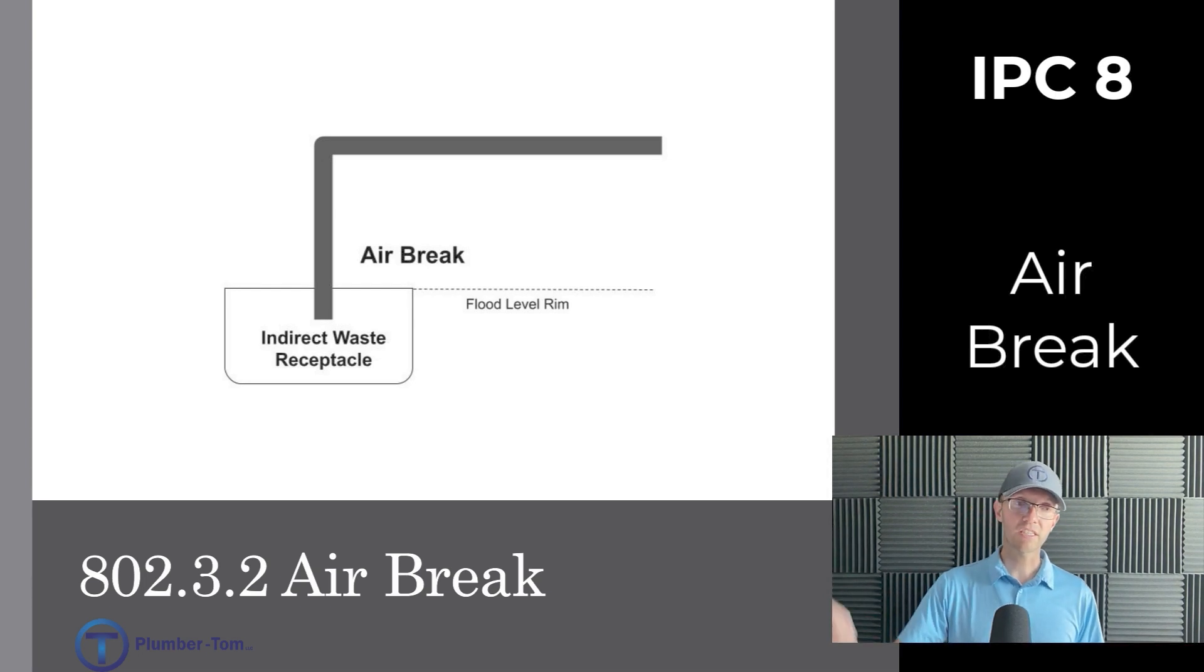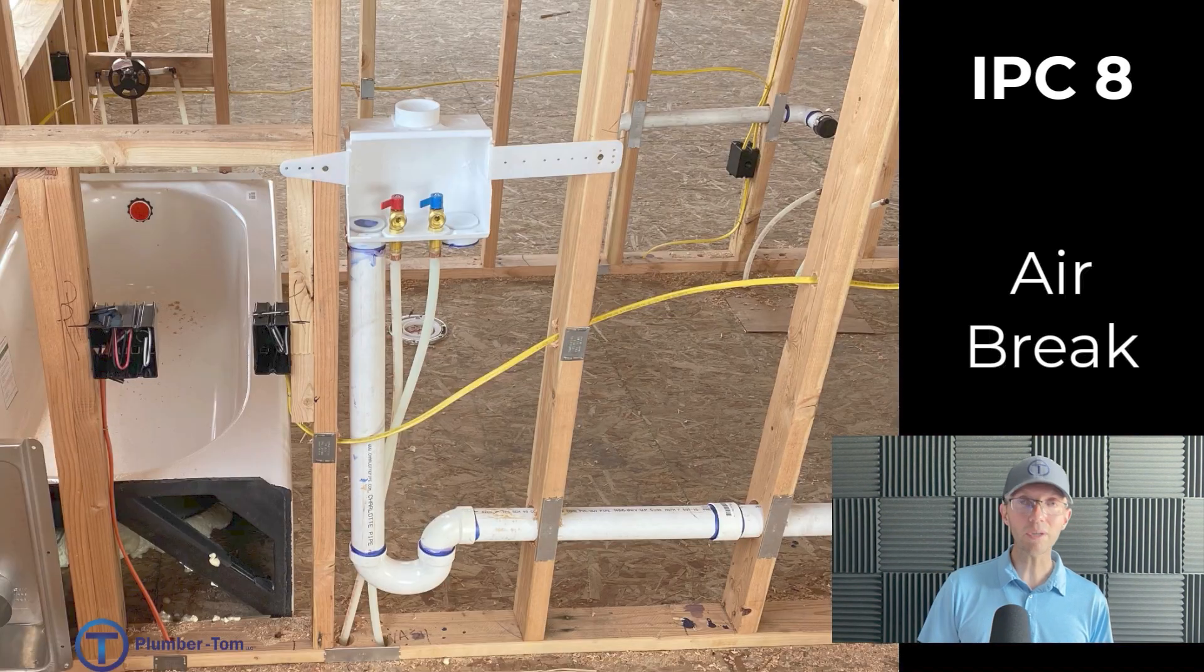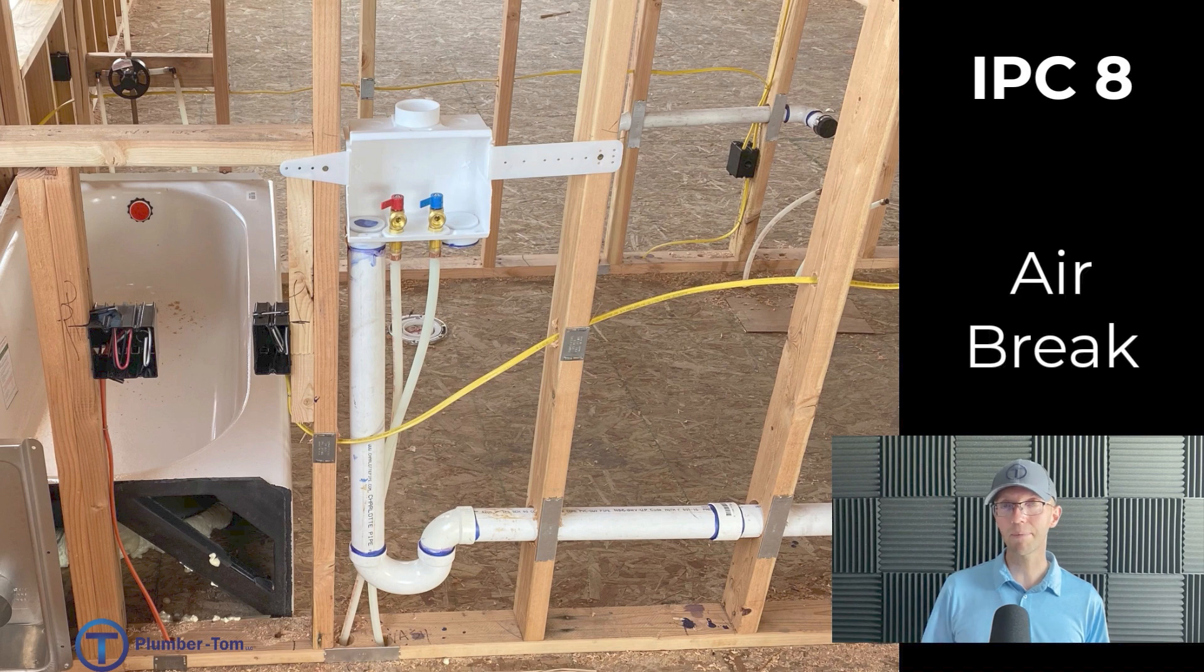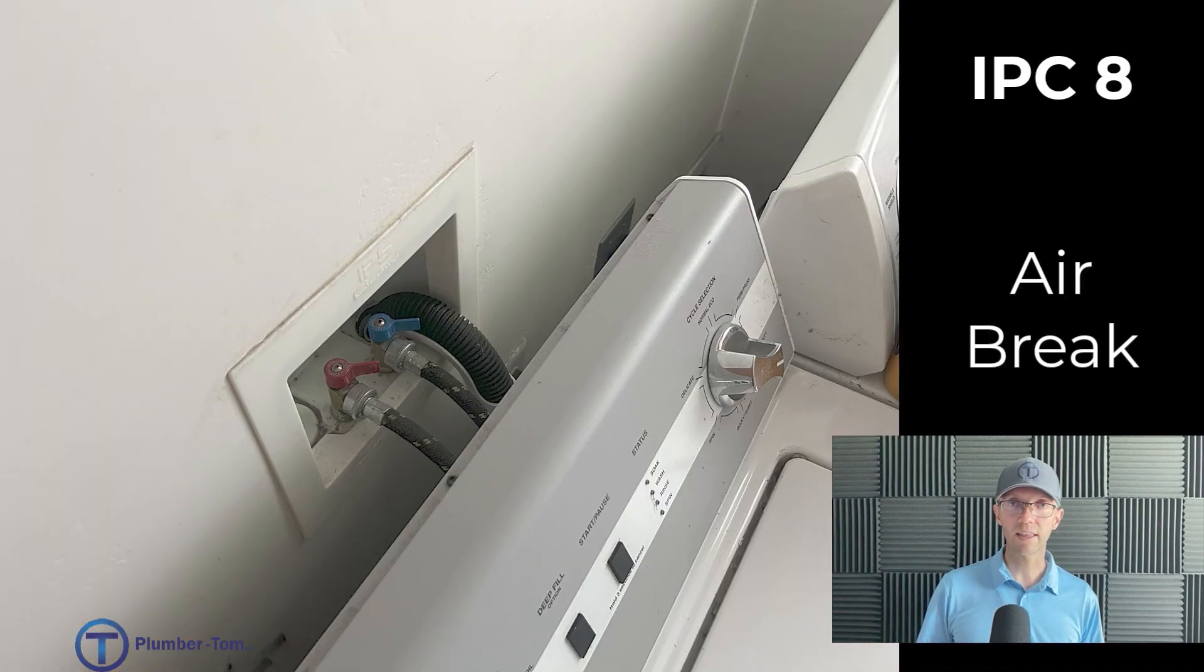The indirect waste pipe can be just stuffed in below the flood level rim. Here's an example in a floor sink or floor drain, but even more common, we're going to see a stand pipe, like we mentioned before, a washing machine with the hose stuffed down into there.